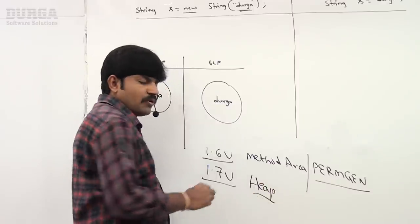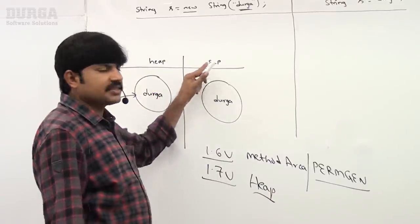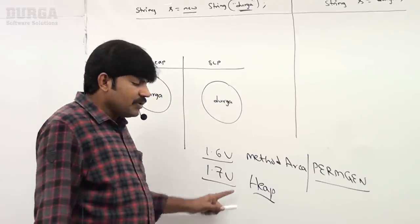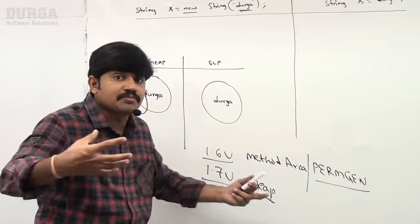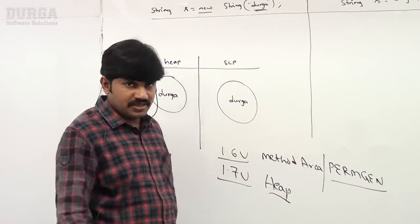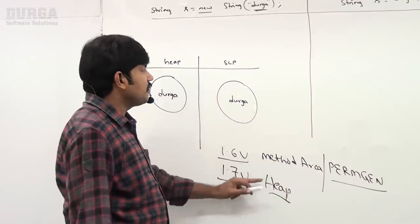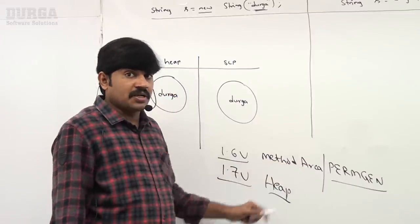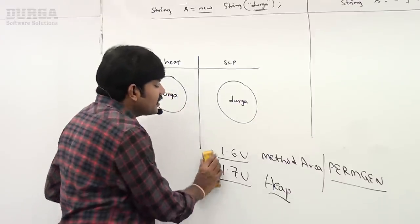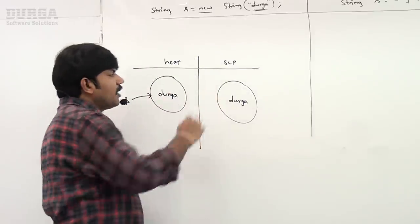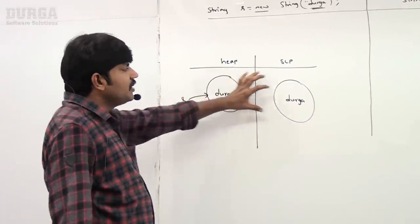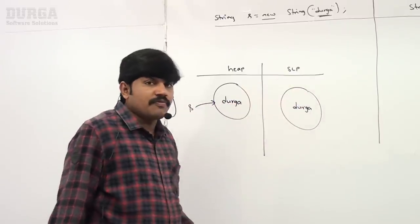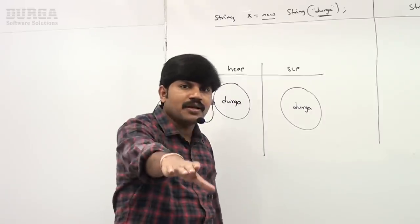From Java 1.7 onwards, for efficient memory utilization, the SCP area was moved to the heap. In the perm gen, the method area SCP was always fixed size, but once moved to the heap the SCP can be expandable. So from 1.7 onward SCP is inside the heap area. In total, for `new String("durga")`, two objects are created: one in the heap area, and one in the SCP.